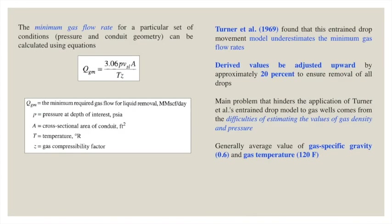The minimum gas flow rate — the minimum required gas flow for liquid removal — is calculated using the equation shown here, where p is the pressure at the depth of interest, A is the cross-sectional area of the conduit, T is the temperature in Rankine, and z is the compressibility factor. This equation can be used to find out the minimum gas flow rate so that liquid will not settle down.